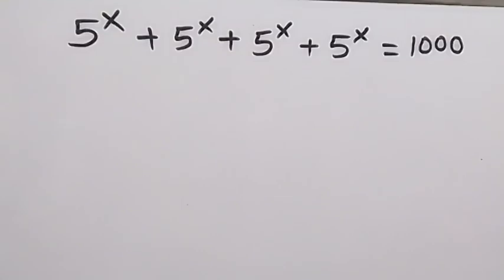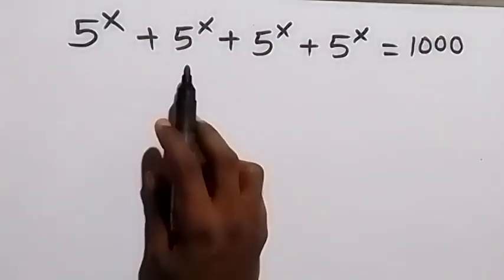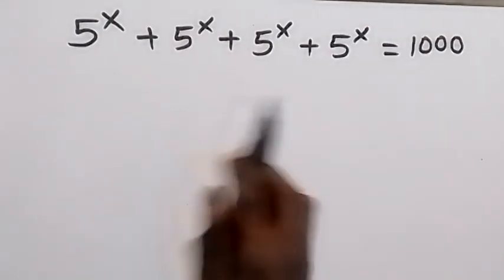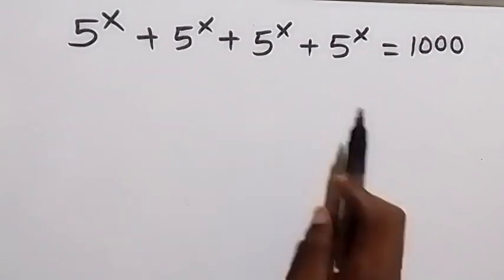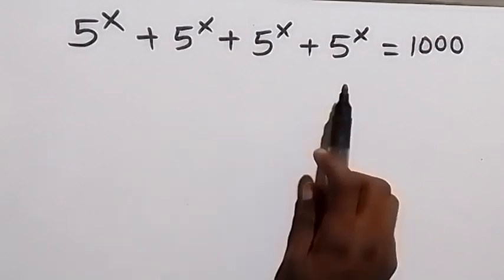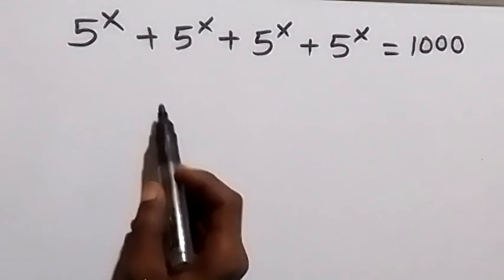Hello, you are welcome. How to solve this nice algebra problem: 5 raised to power x, plus 5 raised to power x, plus 5 raised to power x, plus 5 raised to power x equals 1000.